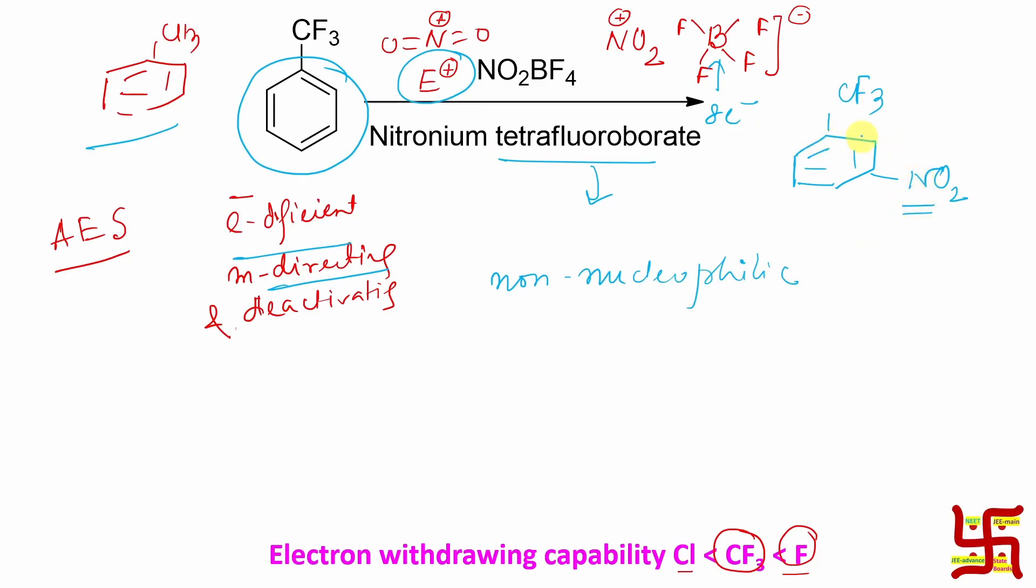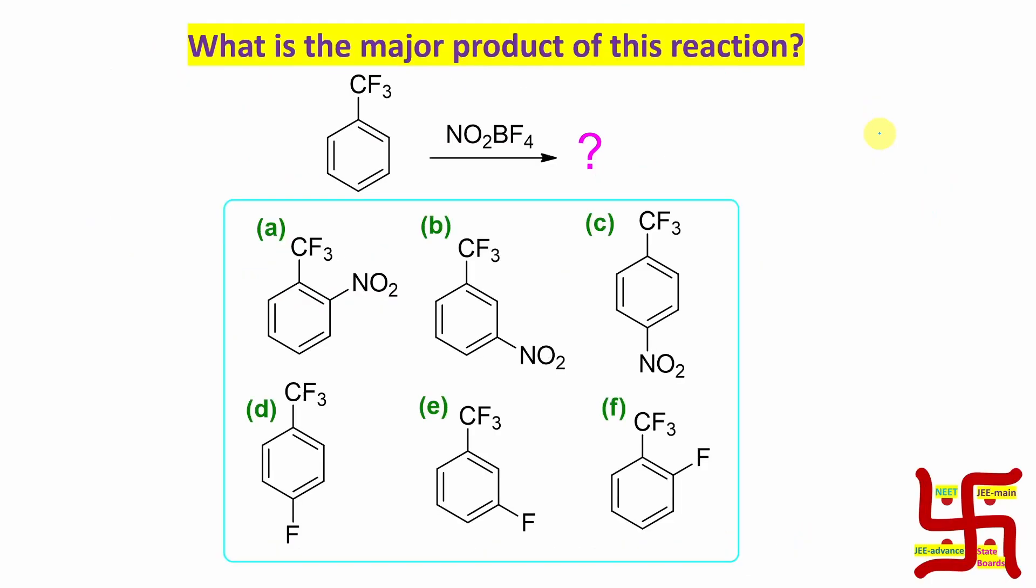So this is actually the answer. Now what's the option? Obviously option B matches here. Now you may ask one question: sir, this is a nitro group, so why not para? As I told, it's meta withdrawing, electron withdrawing, that's why it cannot go either para or ortho, so not possible.